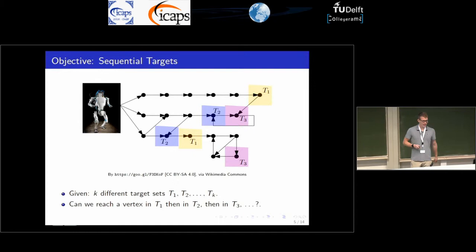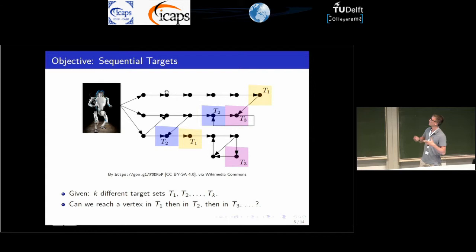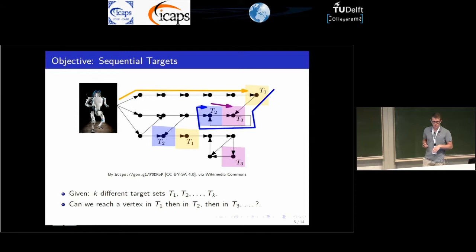The last objective is sequential targets, where you are given K different target sets and you need to reach a vertex in T1, then a vertex in T2, then T3. Imagine the robot is transporting resources around. In this case it's also possible — it just takes the uppermost path, then goes down, takes the loop to T2, then goes to T3.